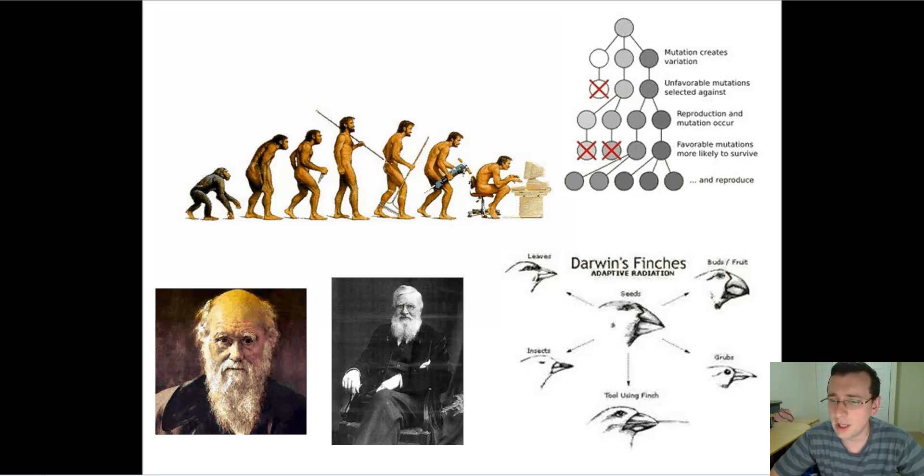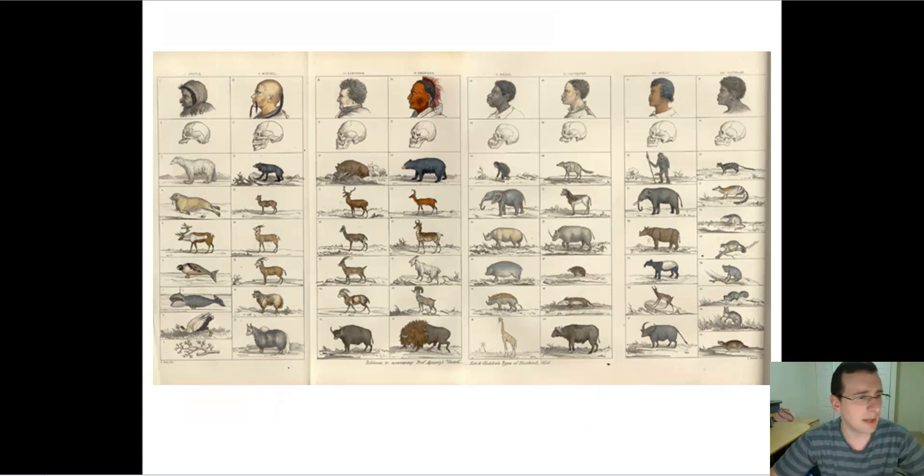What both Wallace and Darwin were missing is the understanding of how these traits are actually passed on from generation to generation, or the idea of particle inheritance. By the way, this you see here, a sketch made by Darwin, which shows the different kinds of variation in life.